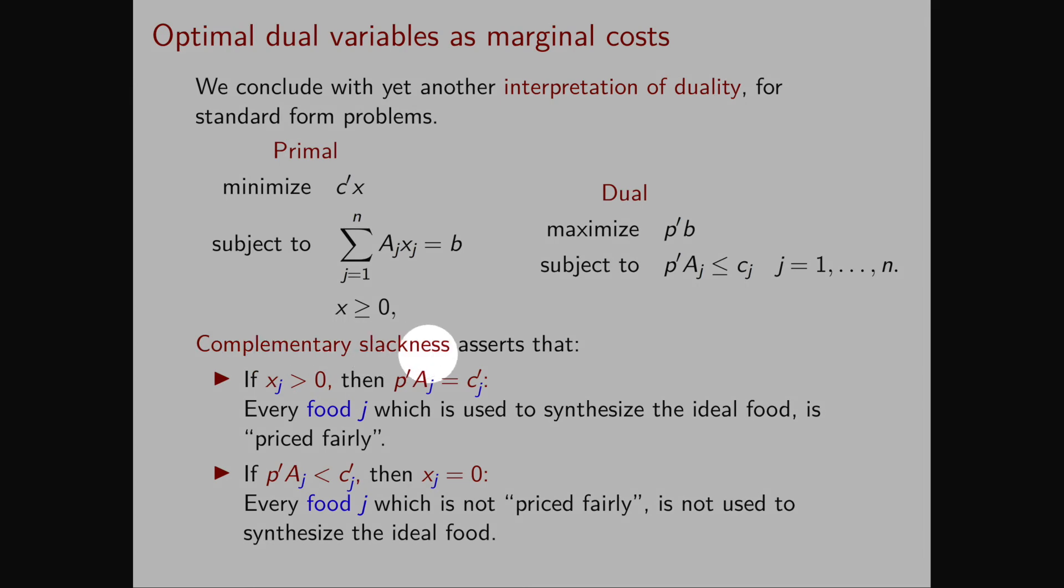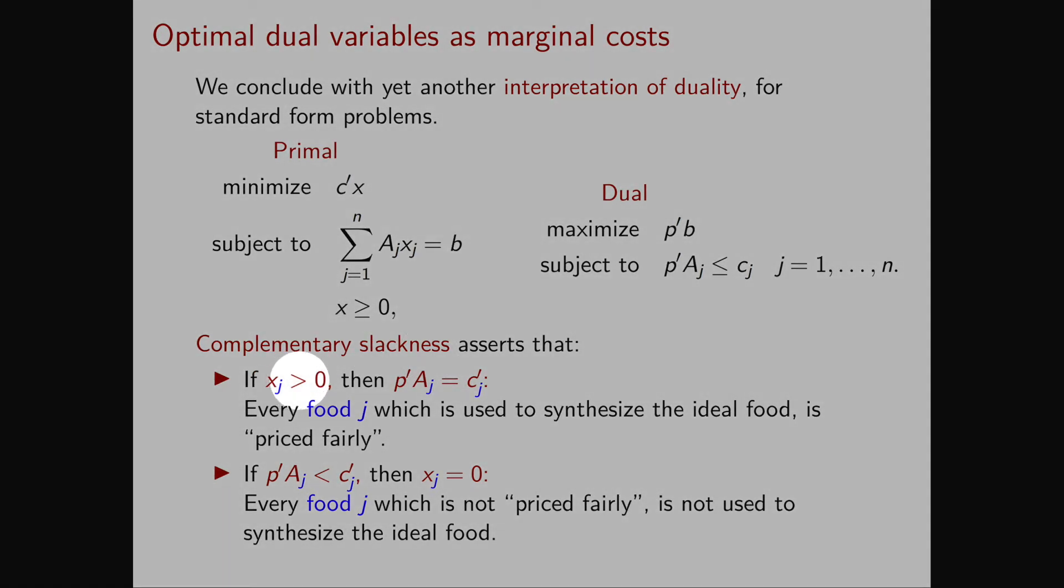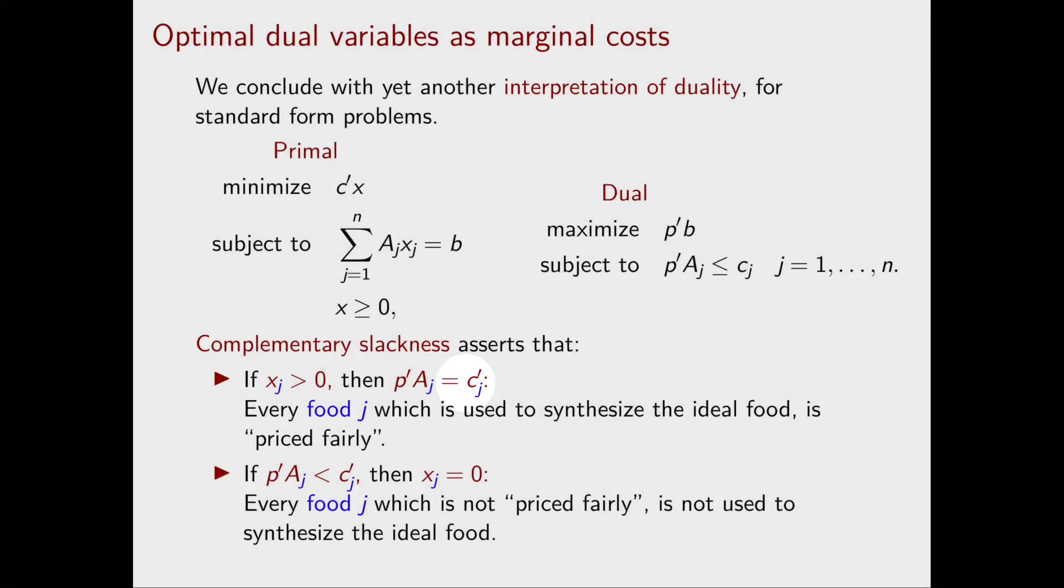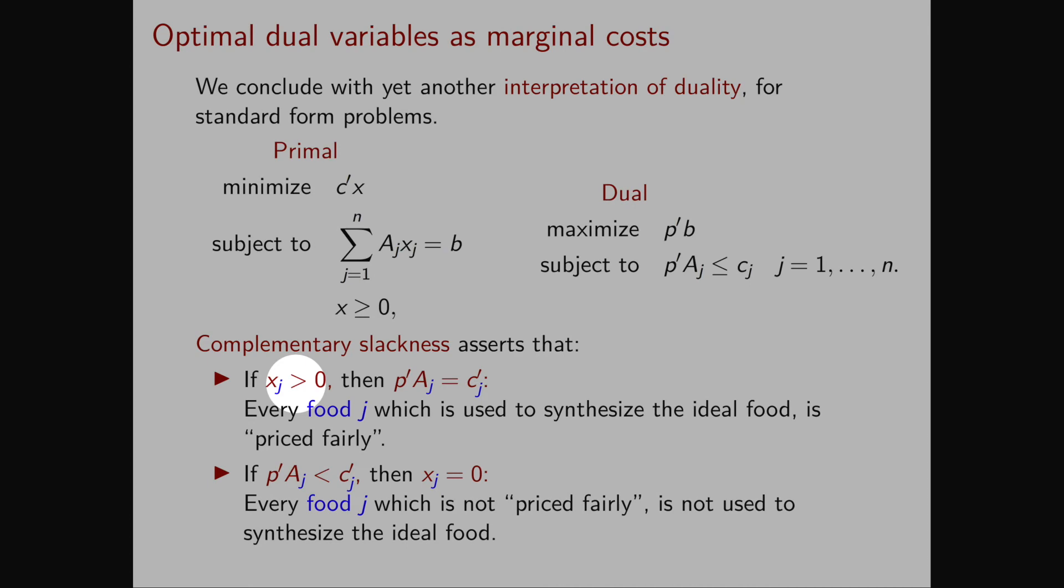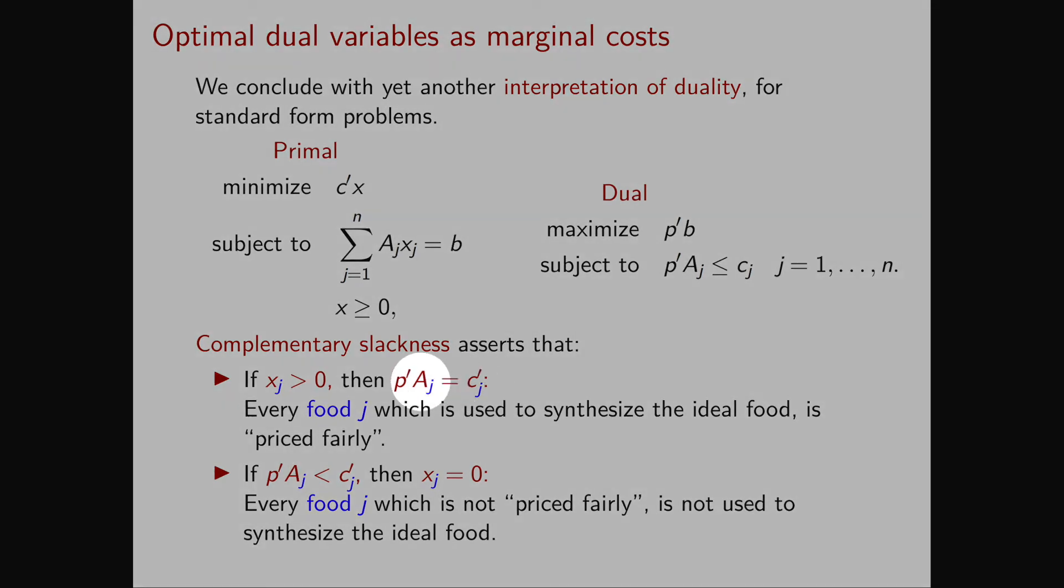Now let's use complementary slackness. If Xj is strictly positive, then we must have P transpose Aj equal to Cj. This means that if the food J is used to synthesize the ideal food, then it is priced fairly, because its fair price is equal to its actual cost.